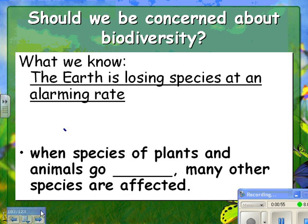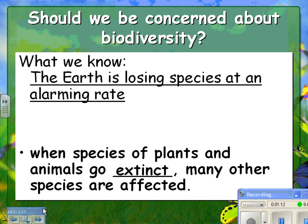Should we be concerned about biodiversity? We know that the earth is losing species at an alarming rate. When species of plants or animals go extinct, many other species can be affected. If you remember the food web from the first video, if you have any one link missing it can affect all the other species — they really depend on each other.